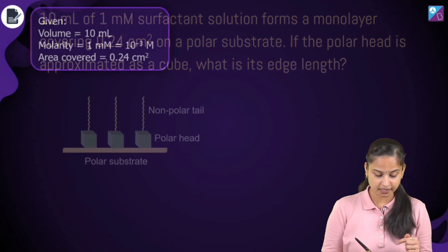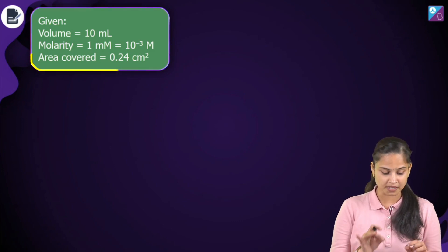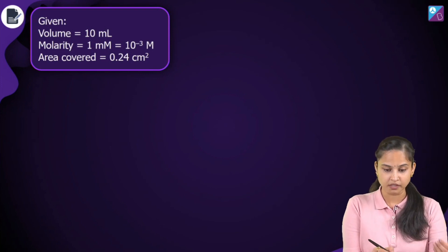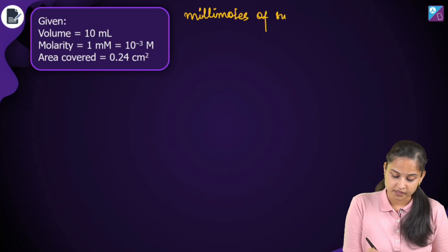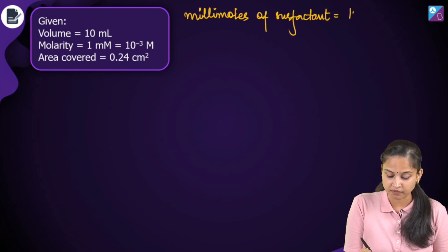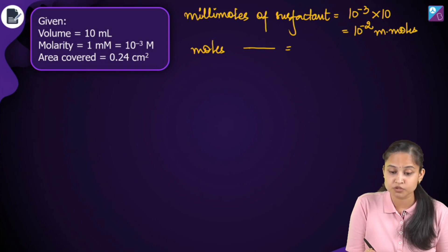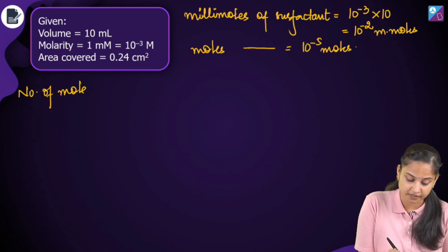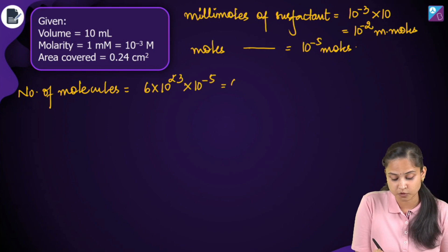Looking at the figure: it's the polar substrate and the polar head of the surfactant has been considered to be a cube, with a non-polar tail. Moving ahead to the solution part. We have been given volume equals to 10 ml, molarity equals to 1 millimolar which means 10⁻³ molar, and area covered is 0.24 cm². Millimoles of surfactant = 10⁻³ × 10 = 10⁻² millimoles. Moles of surfactant = 10⁻⁵ moles. Number of molecules of surfactant = 6 × 10²³ × 10⁻⁵ = 6 × 10¹⁸.